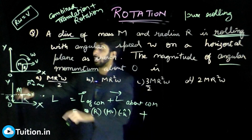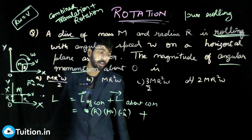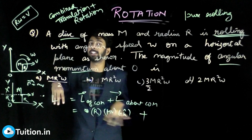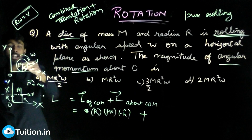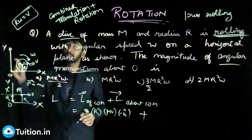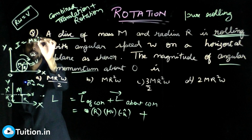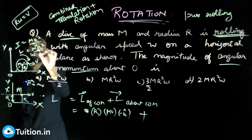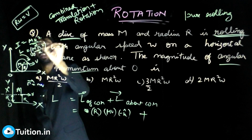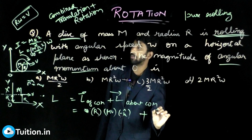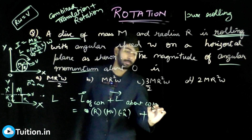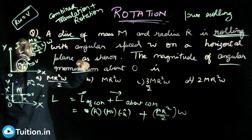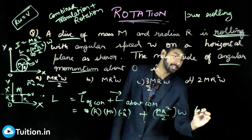Plus, you need to find the angular momentum about the center of mass. Standing on the center of mass, the only thing you see is the body rotating. For a disk rotating about its central axis, moment of inertia I equals mr²/2. So angular momentum about center of mass is I·omega equals mr²/2 times omega. By the right-hand rule, this direction is also minus k̂.